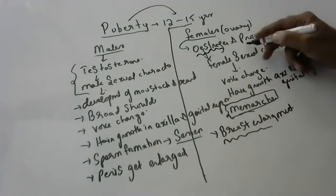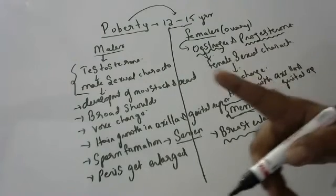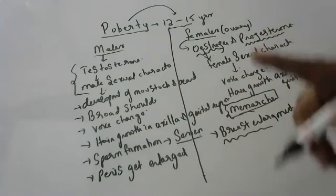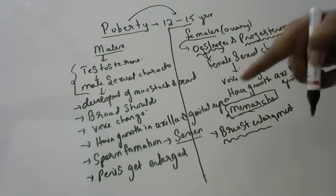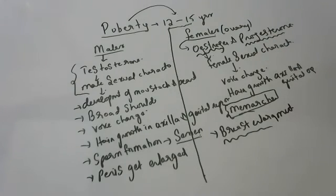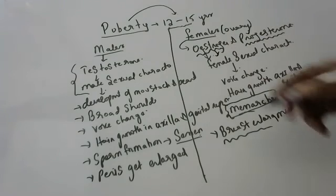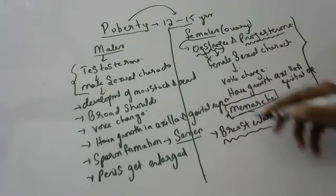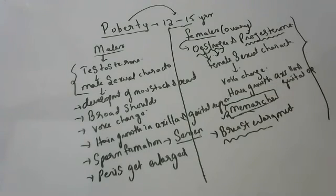So estrogen is the hormone which helps in development of female sexual characteristics. Now what is progesterone? Progesterone takes care of pregnancy children, in preparation of endometrium from 14 to 28 day of menstrual cycle to undergo implantation.